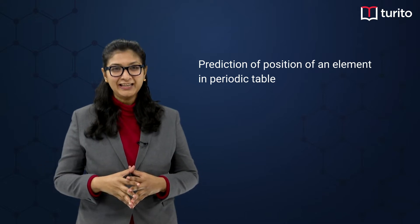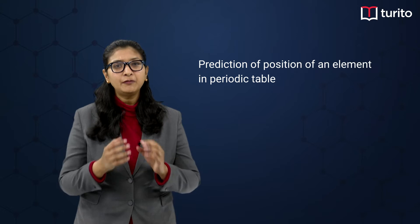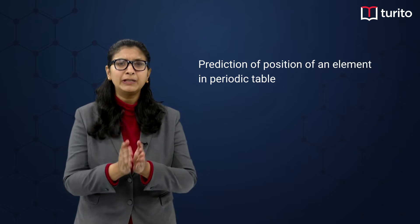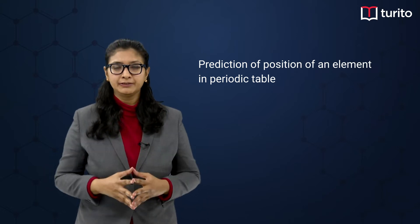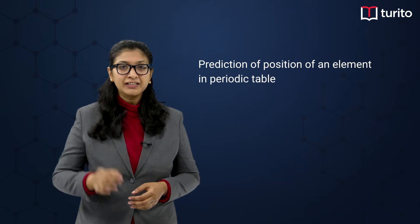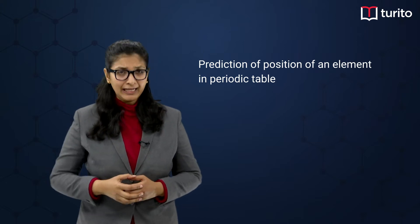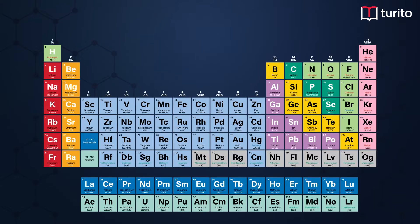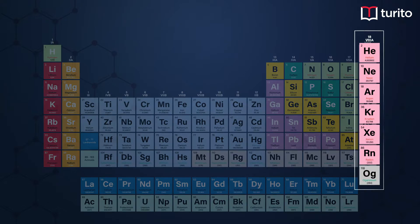Now, for that, what we have to do? We have to remember the placements of few elements. The first one is noble gases. As you know, noble gases are present at the last of the periodic table.